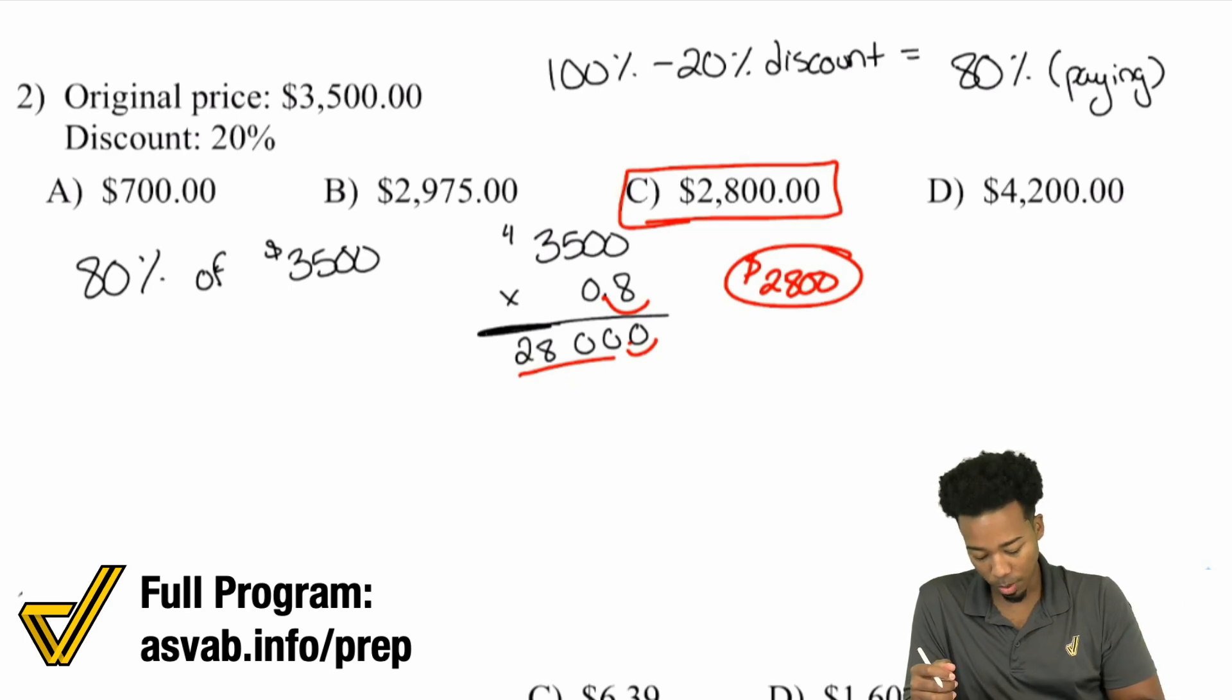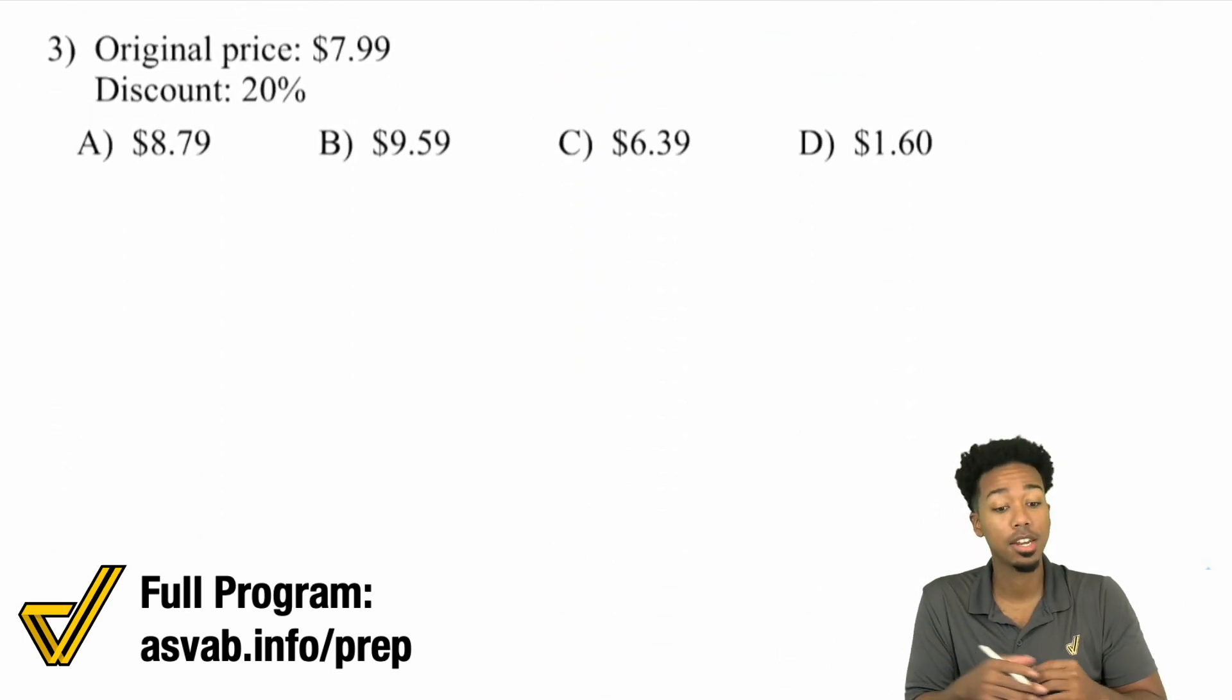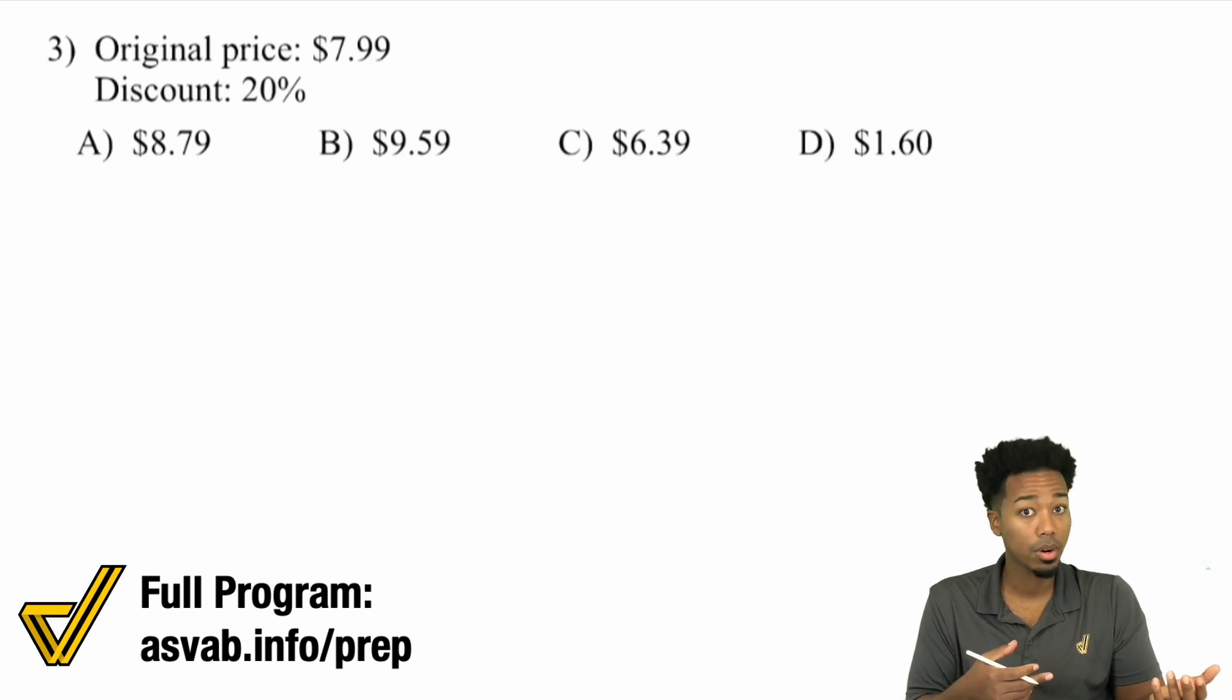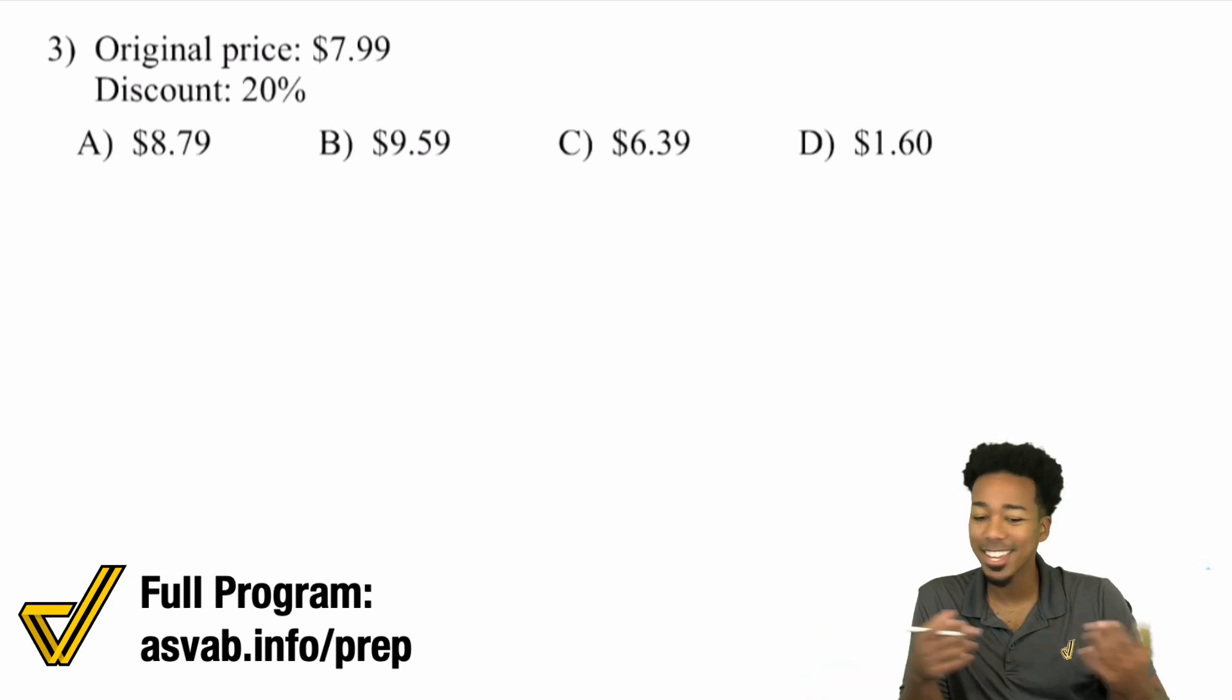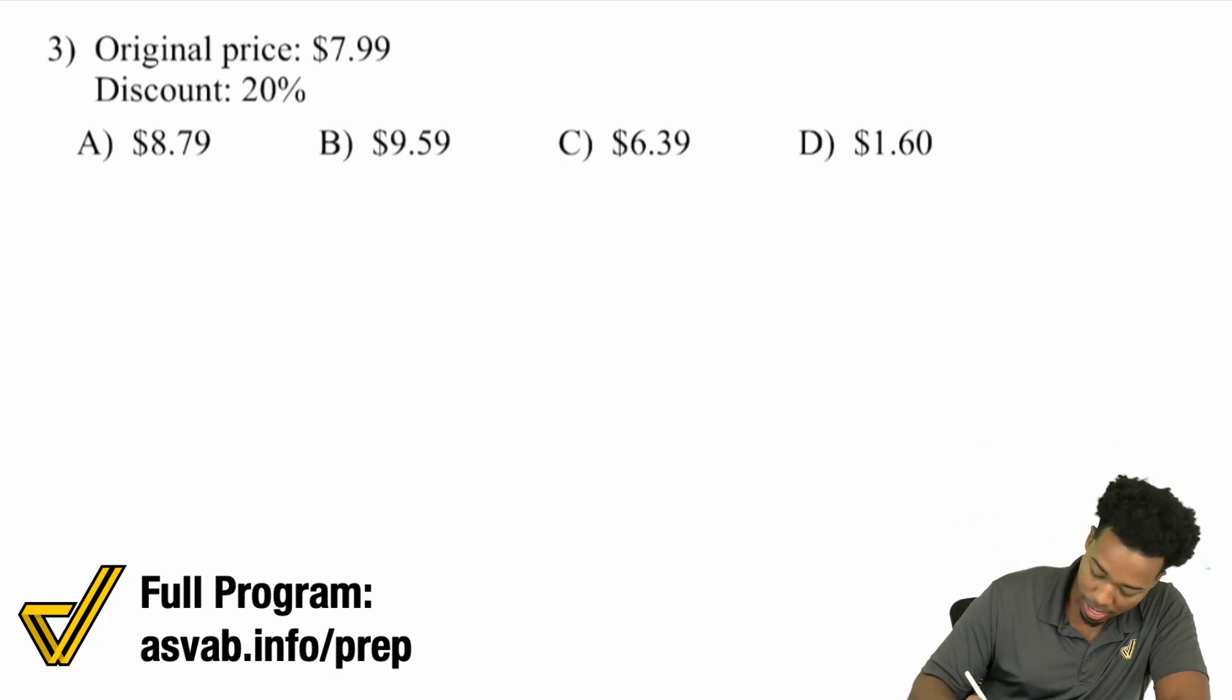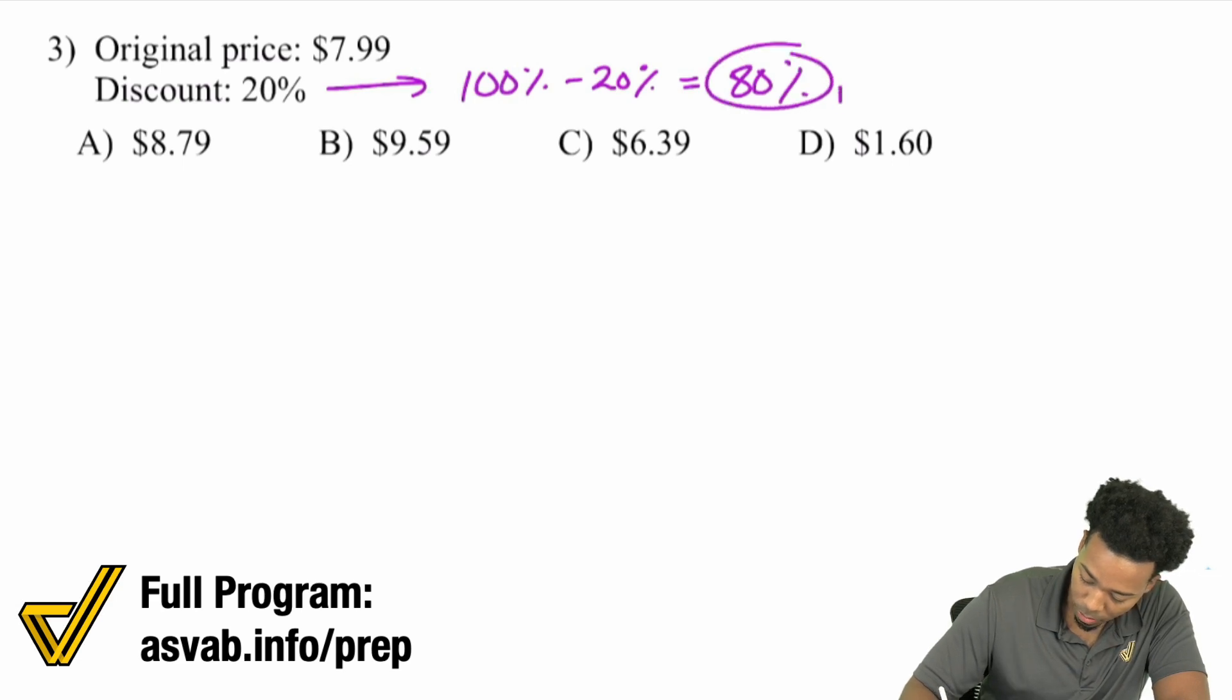Let's do one more. The original price is $7.99, and we want to take away 20%. Two options: figure out what 20% is and subtract it, or subtract 20% from 100% and find that percent instead. Either way works. Discounted 20% means 100% minus 20% equals 80%. That's what you're paying.